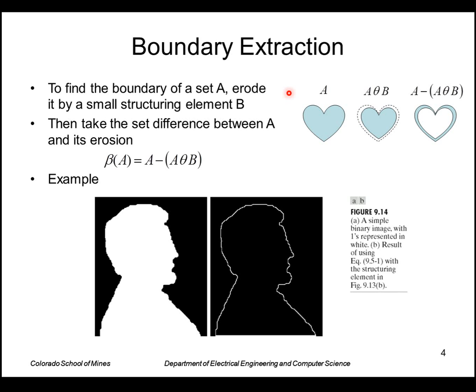We take our set A, erode it by a small structuring element so it shrinks it a little bit, and then we take the set difference between those two. It's expressed as A minus A eroded by B.